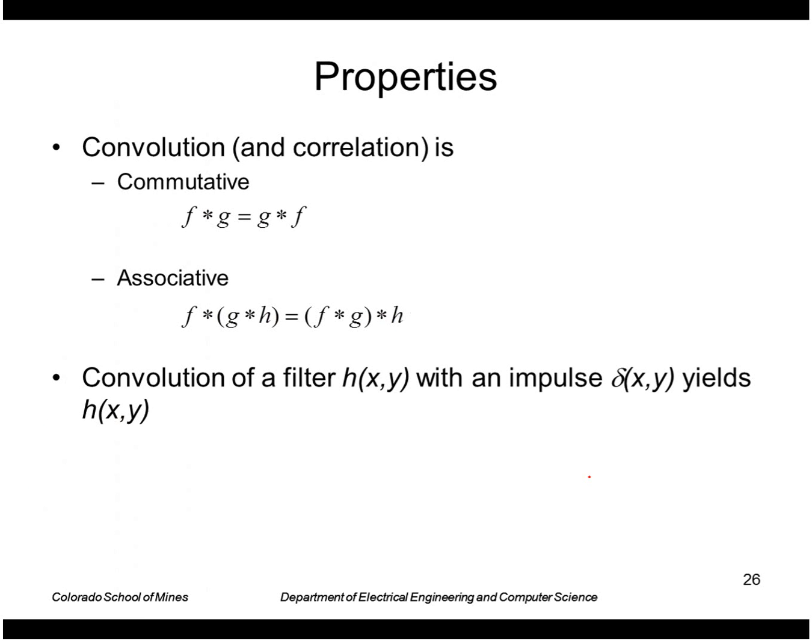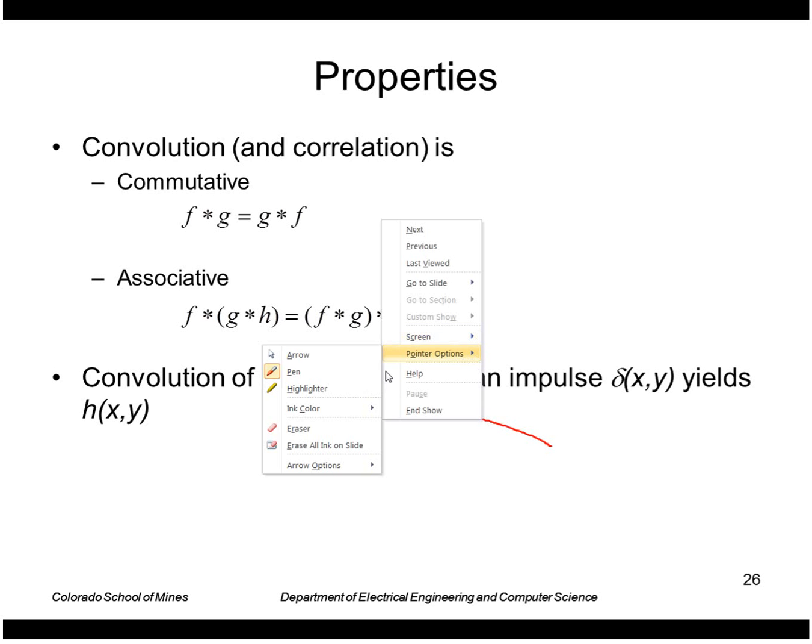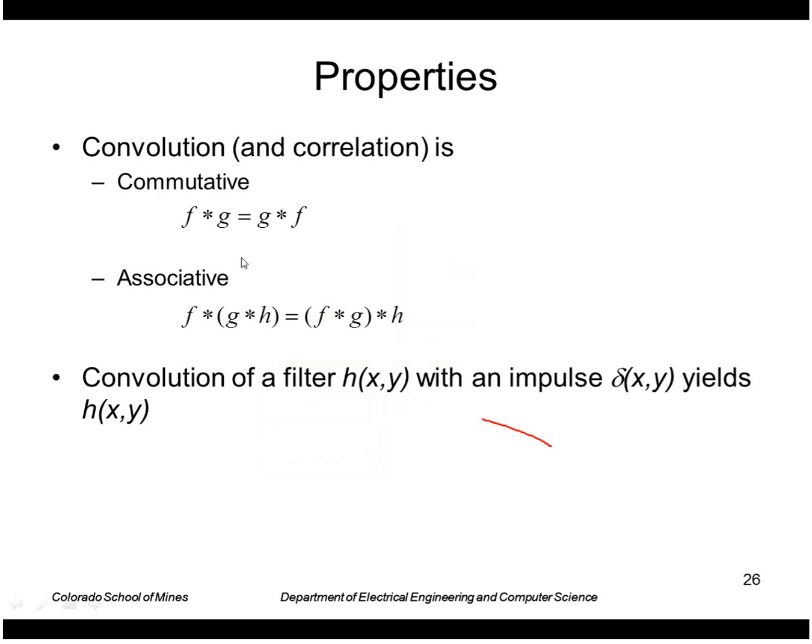Some properties of these filters: they're linear filters, they're commutative and associative, and as I just mentioned, the convolution of a filter with an impulse yields the filter.